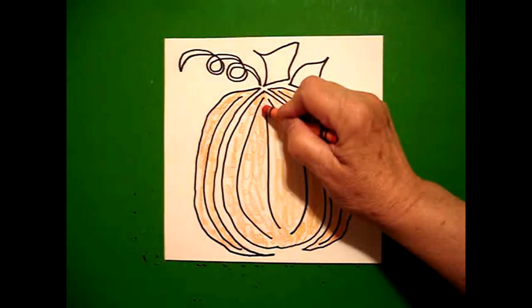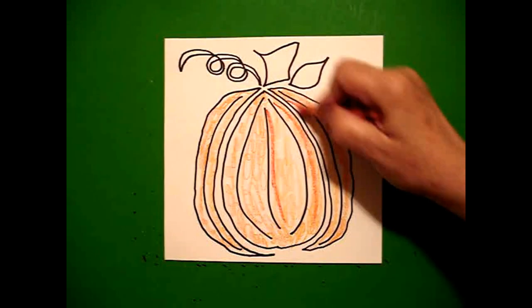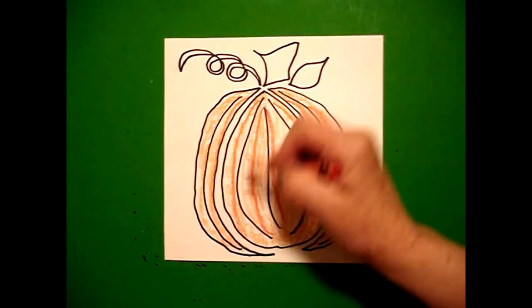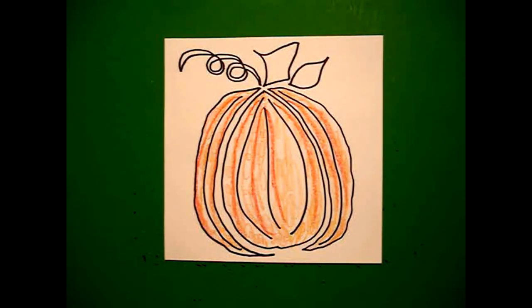Then, I take my red-orange, and I just add a line of my red-orange on my pumpkin base.